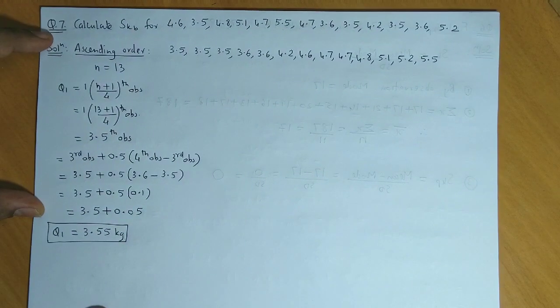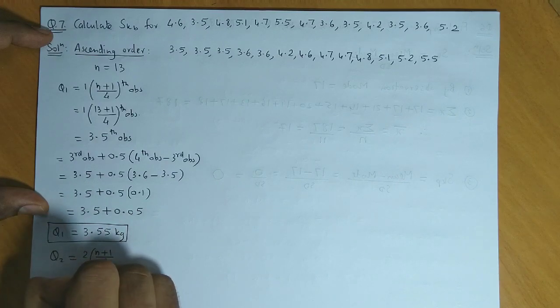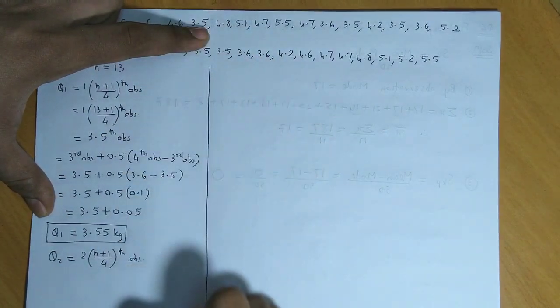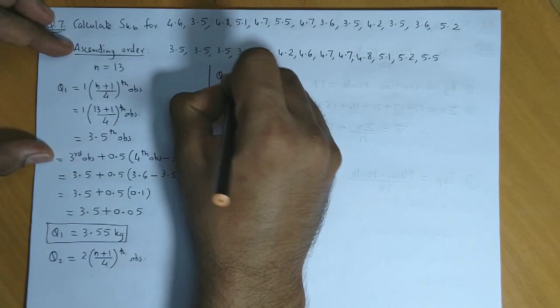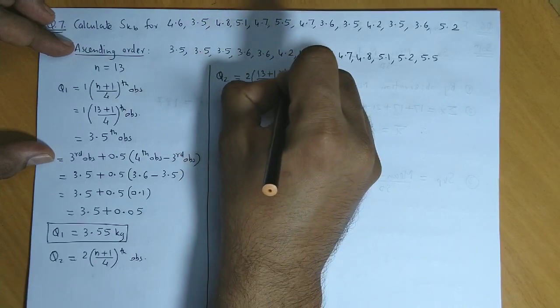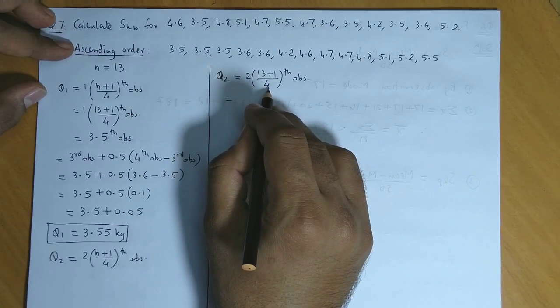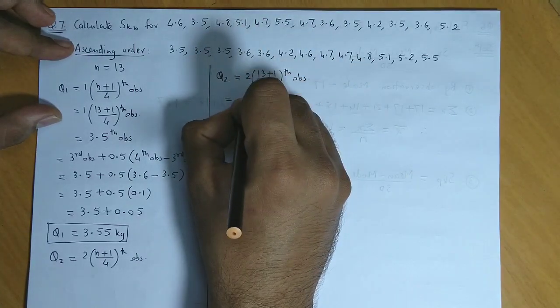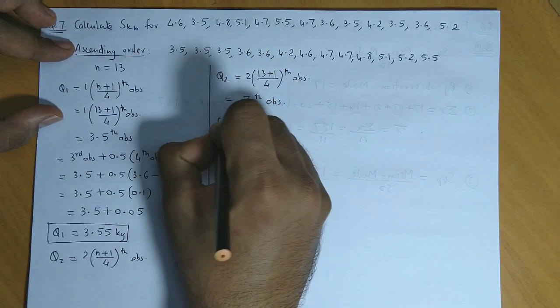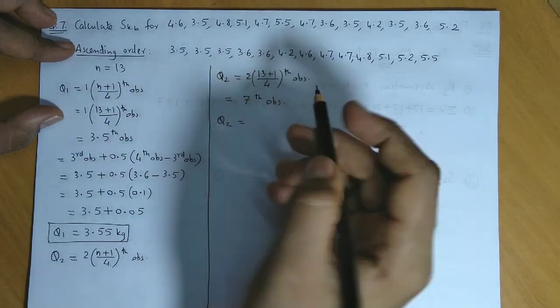Next we calculate Q2. Now Q2 will be equal to 2 times n plus 1 upon 4th observation. So let us substitute n. So we have Q2 equal to 2 times 13 plus 1 upon 4th observation. So we have 13 and 1 that is 14. And this if you cancel you get 2, so 14 by 2. So basically you have the 7th observation. The value of 7th observation. So Q2 is equal to 1, 2, 3, 4, 5, 6, 7. So the 7th observation is 4.6. So Q2 is equal to 4.6 kilograms.